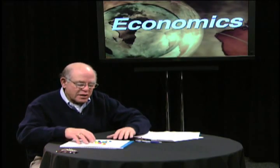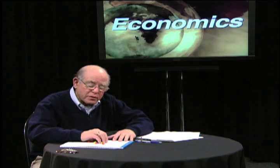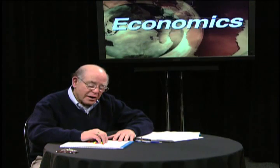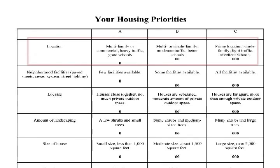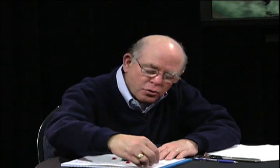They'll discuss the options: location could be multifamily or commercial heavy traffic with good schools, or multi/single family with moderate traffic and better schools, or a prime location, single family, light traffic, with excellent schools. Let's assume they say that education is really very important, so they put three M&Ms in the schools category. To them, the education of their children is the most important thing of all. So what they're doing is setting priorities, exactly as they should.